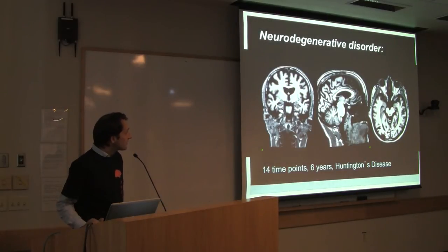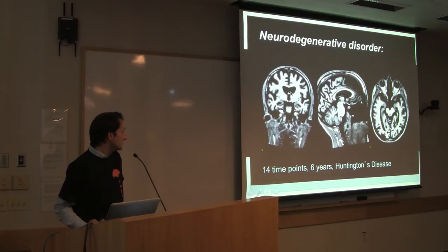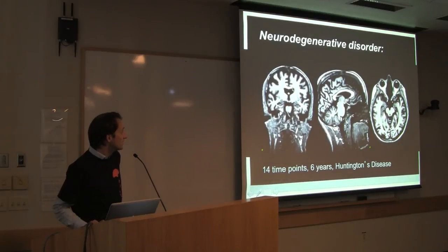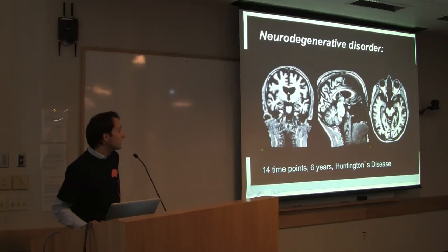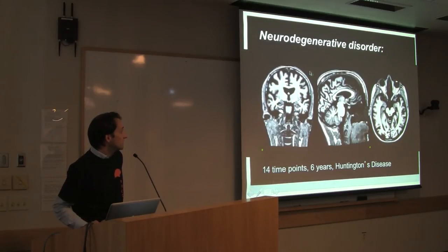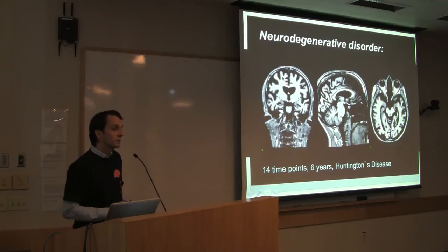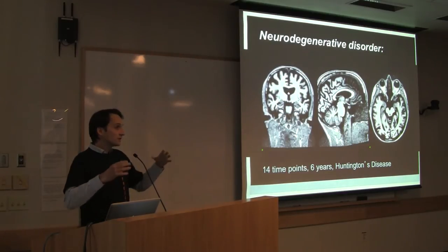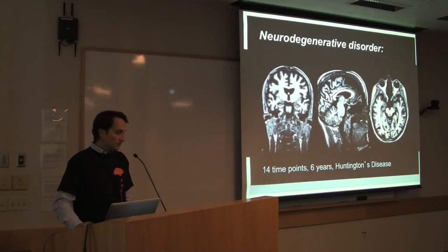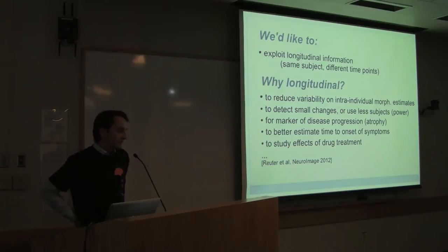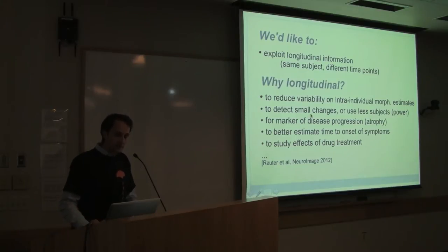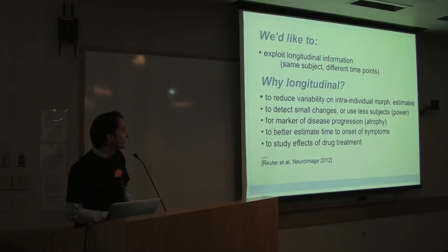But what happens if you have several time points from the same subject? This is 14 time points, 6 years of Huntington's disease, and you can clearly see the changes — the ventricles growing, the corpus callosum bending upward and thinning. But still, lots of the anatomy is the same because it's the same subject. The longitudinal FreeSurfer pipeline exploits the information that this is the same subject at different time points, helping to reduce variability on estimates so we can detect much smaller changes with the same statistical power.